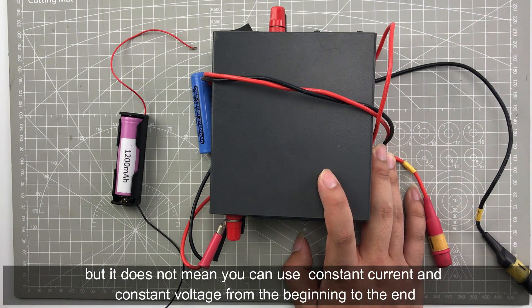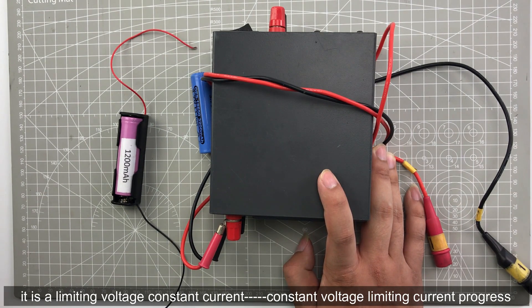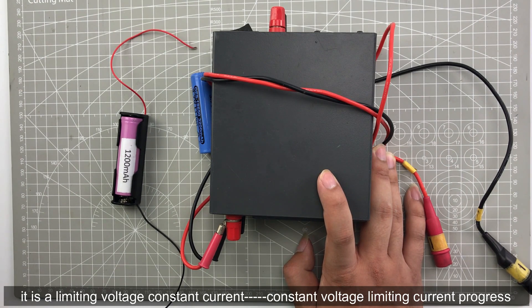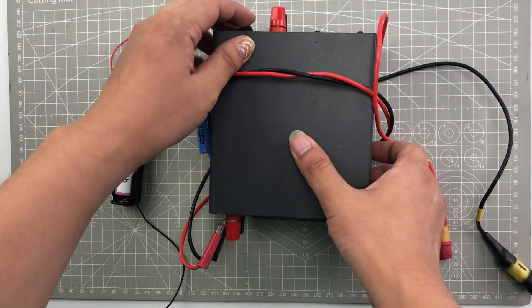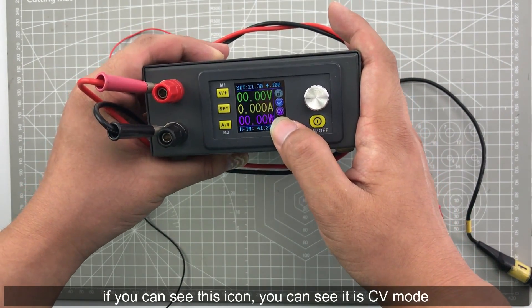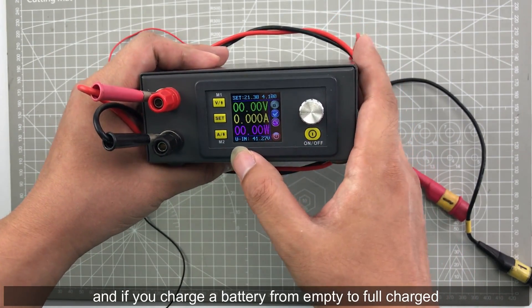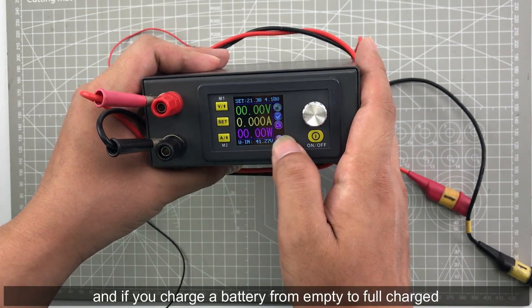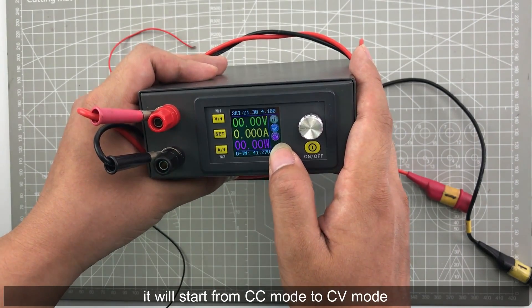But it doesn't mean you can use constant voltage and constant current from the beginning to the end. It is a limiting voltage constant current to constant voltage progress. If you see this icon, you can see it is CV mode, and if you charge a battery from empty to full it will start from CC mode to CV mode.